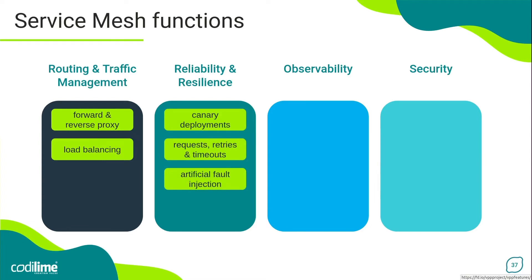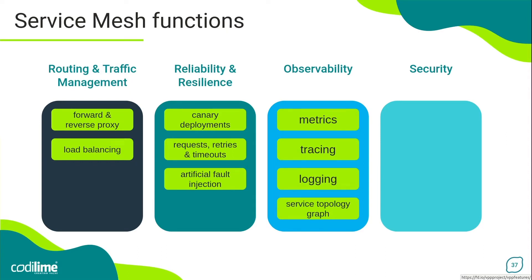Another useful feature is support for deployments based on a canary strategy, like splitting traffic based on application versions. A service mesh should allow for defining policies for requests, retries, and timeouts, which is important in the process of calling service instances. Another nice option is artificial fault injection to test the resiliency of applications. Observability is mainly about collecting various types of metrics for services, like request volumes, access rates, latencies, etc., as well as gathering data needed to troubleshoot latency issues through tracing, and offering verbose logging capabilities.